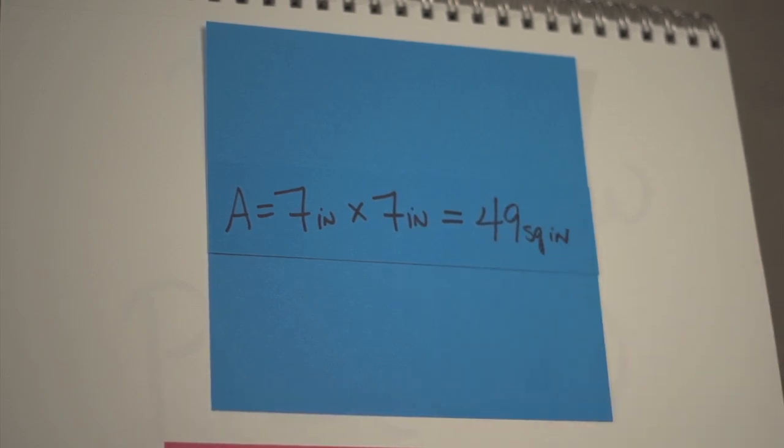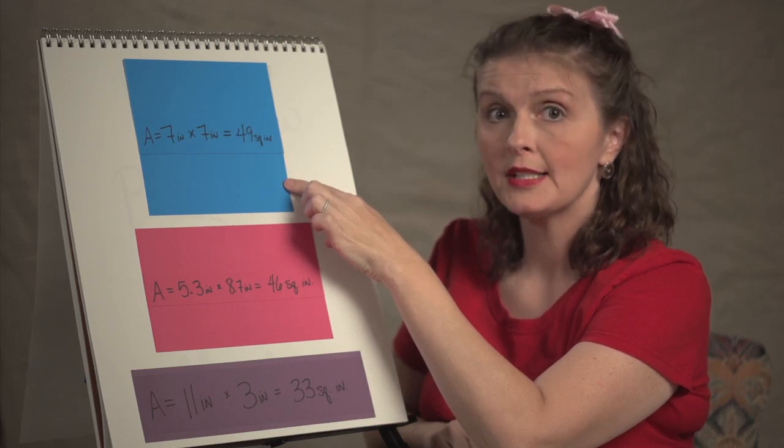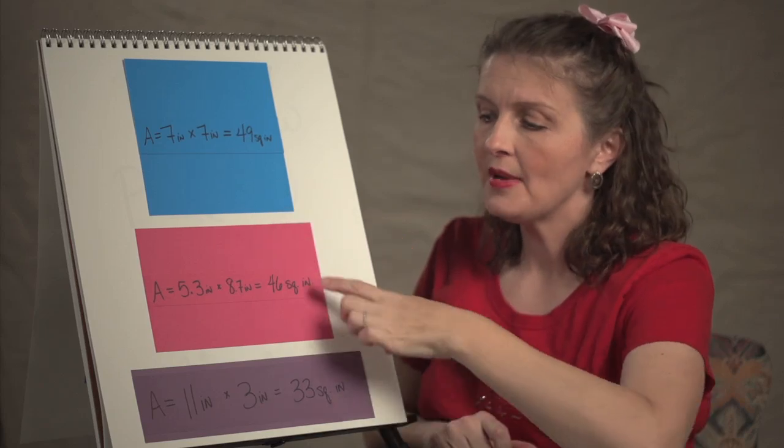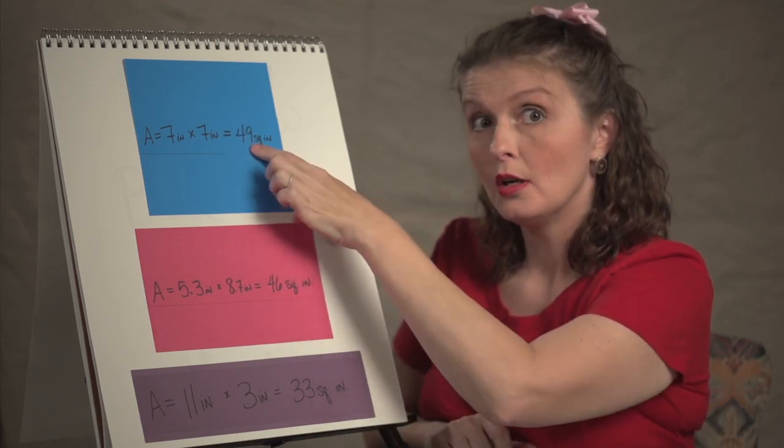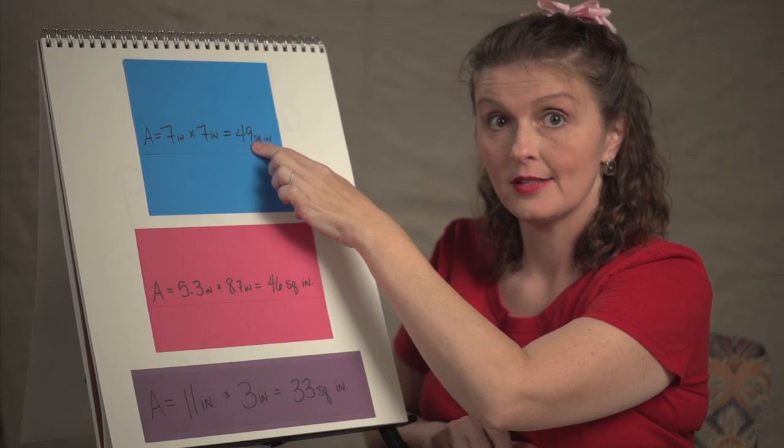This is the biggest area that we can get. So if we know the perimeter of a rectangle, we might not be able to tell for sure what the area is, but we can tell what the maximum area is.